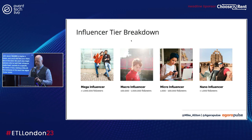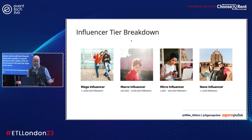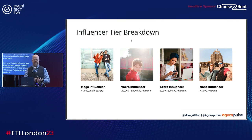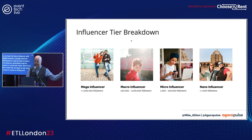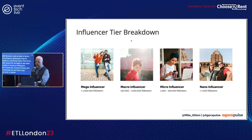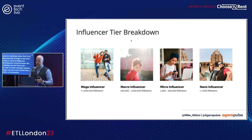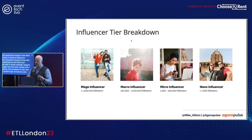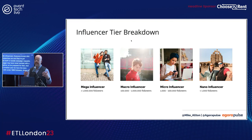Down another tier we have the micro influencer with a thousand to a hundred thousand followers. Someone with a hundred thousand followers can have a great deal of influence, particularly if they've stayed focused on a particular niche. At these smaller levels, we begin to see challenges when it comes to finding and working with influencers. Everyone knows who the mega celebrities are and they've got experienced staff to handle campaign requests — but Joe the vlogger may have never worked with a business before. Finally, at the smallest tier, we have the nano influencer with under a thousand followers. These are typically prominent members of their own community, and may actually be the best person to work with for your event.